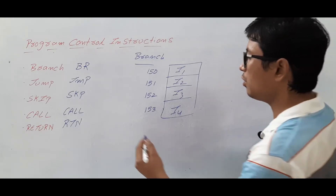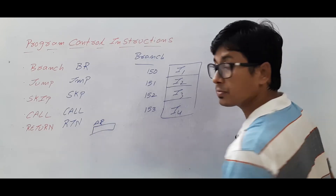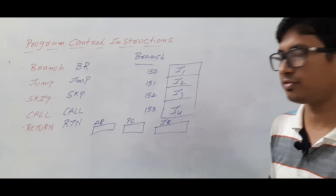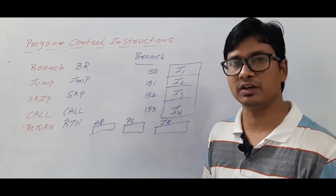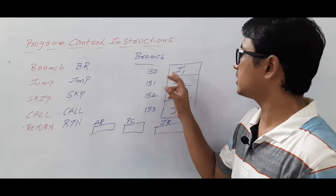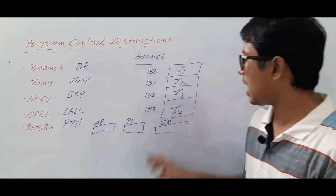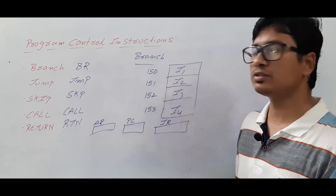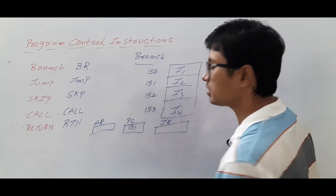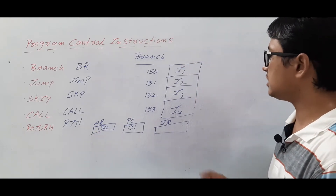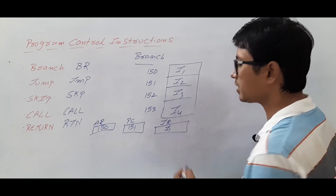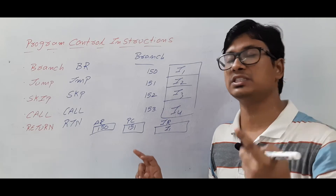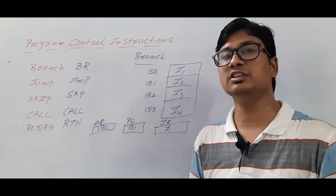Whenever instructions are executing, we will have an address register, a program counter (program control register), and an instruction register. The address register consists of the address of the current instruction you are executing. The program counter stores the address of the next instruction. So if instruction 1 is executing, the address of instruction 2 — which is 151 — will be stored in the program counter, whereas the address register will consist of 150. The instruction register consists of the instruction which you are currently executing.